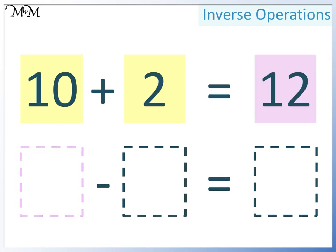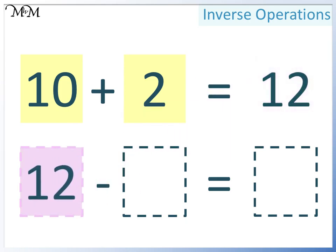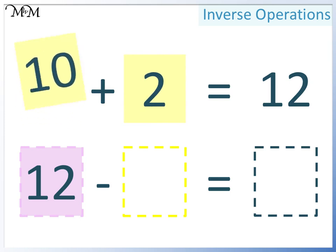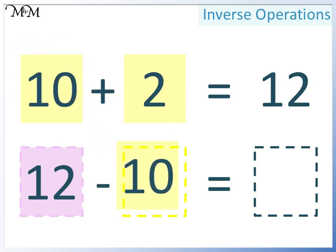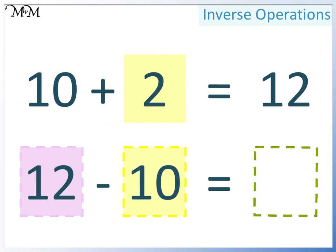The biggest number is 12. Next, we want to take away a number. We can choose either 10 or 2, because they are both smaller than 12. Let's choose 10. And finally, here we can move the 2. We now have 12 take away 10 equals 2.